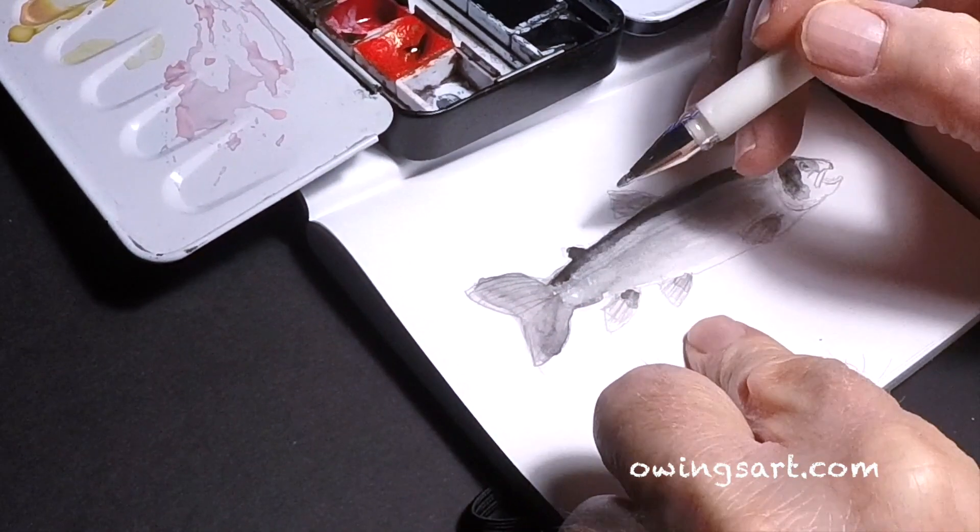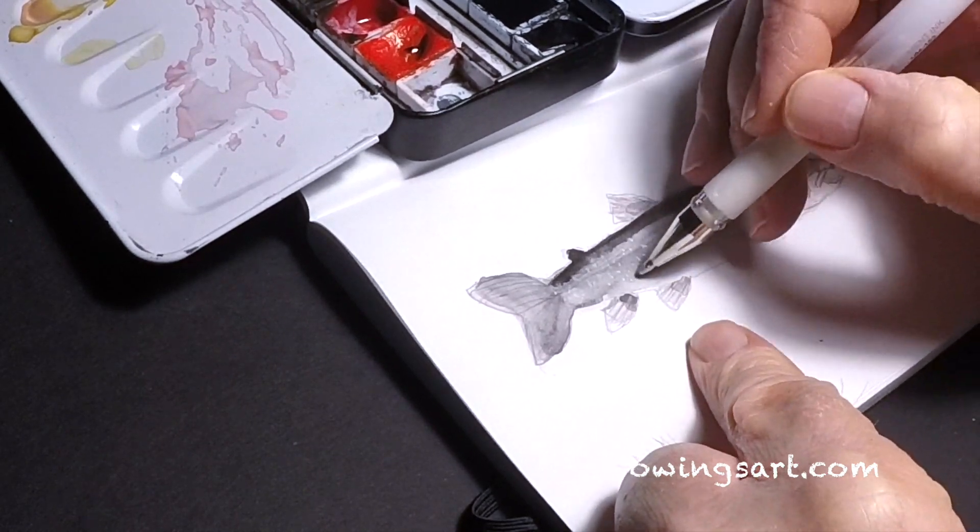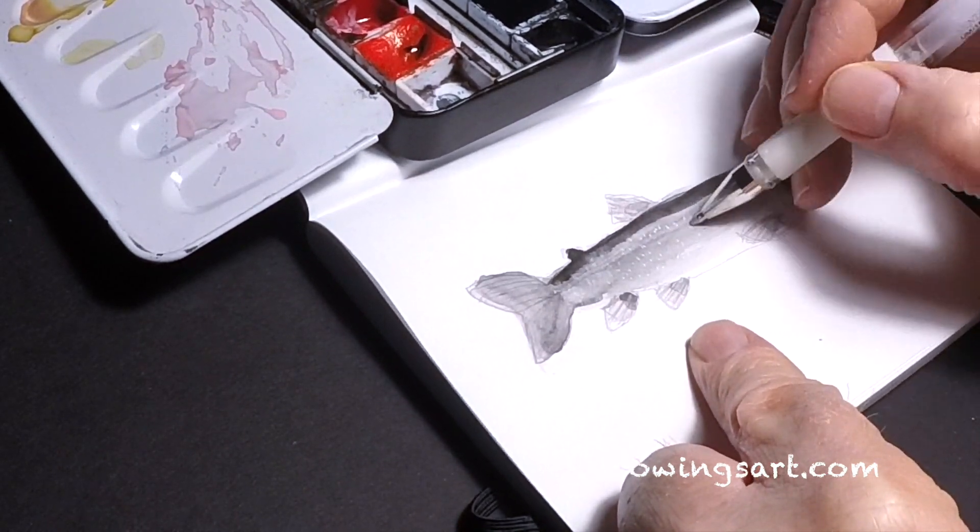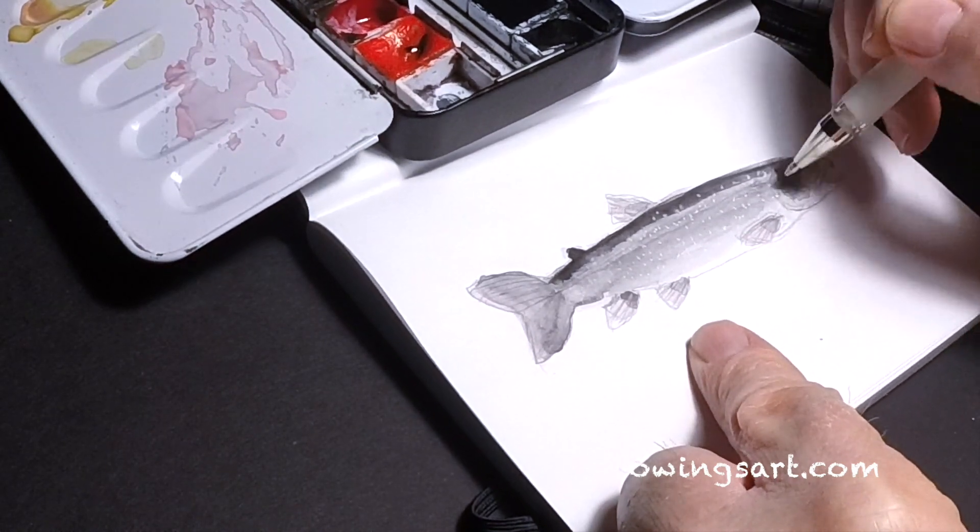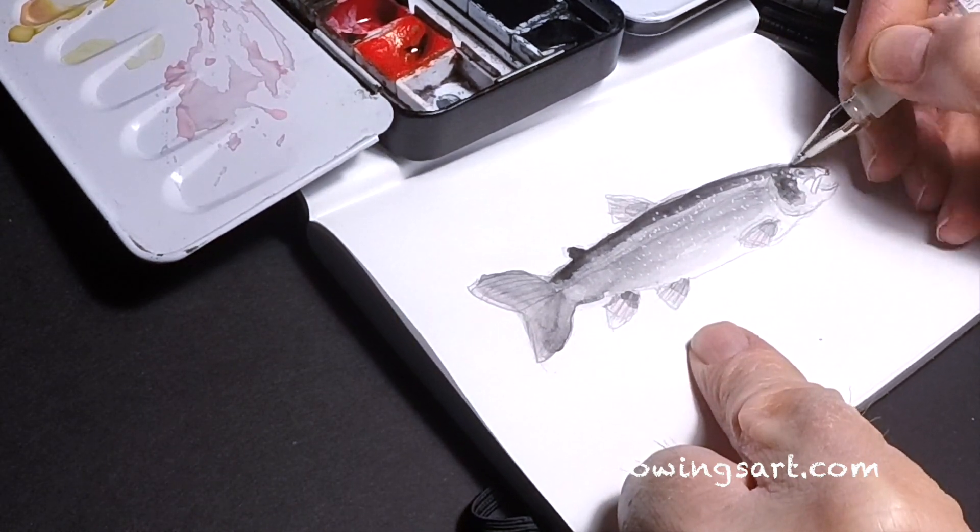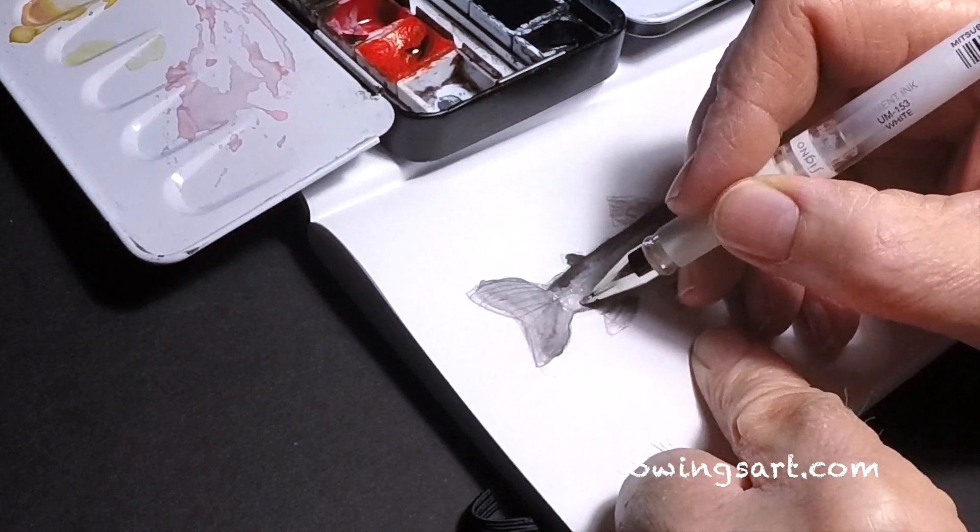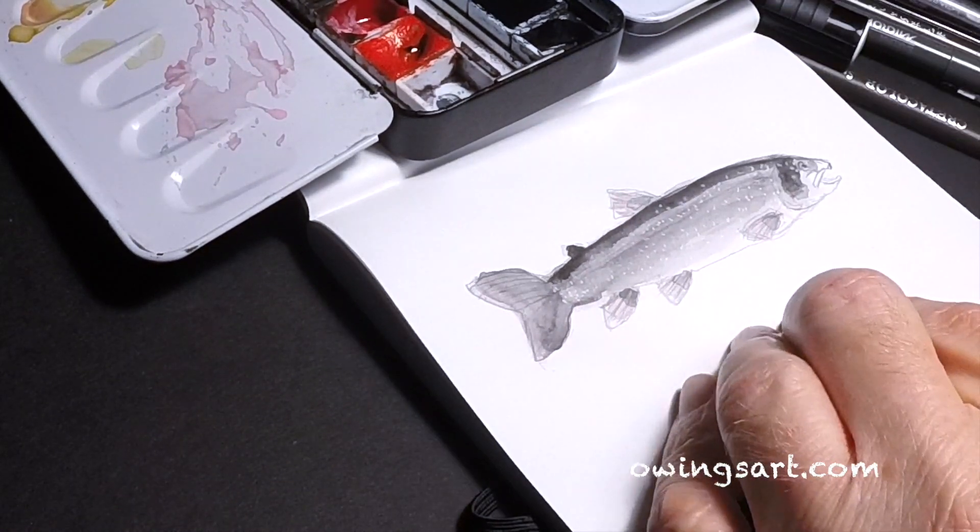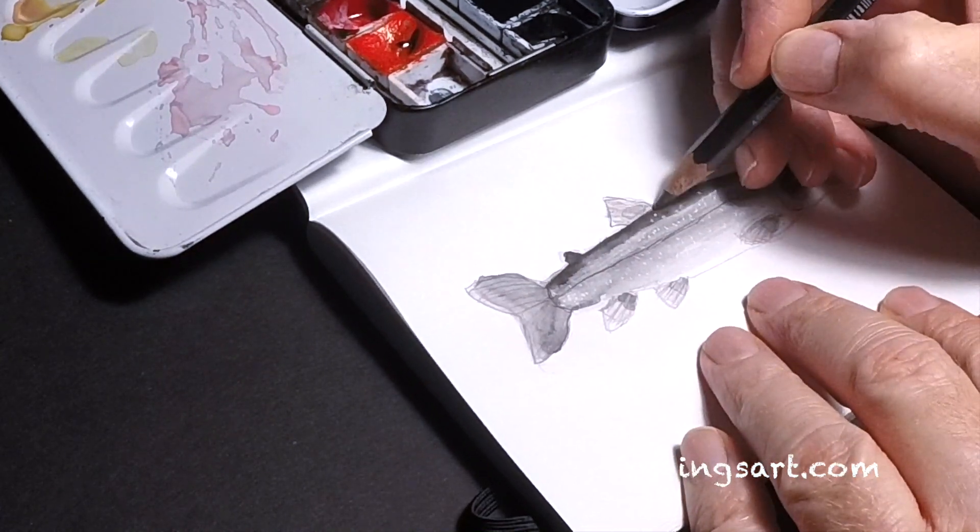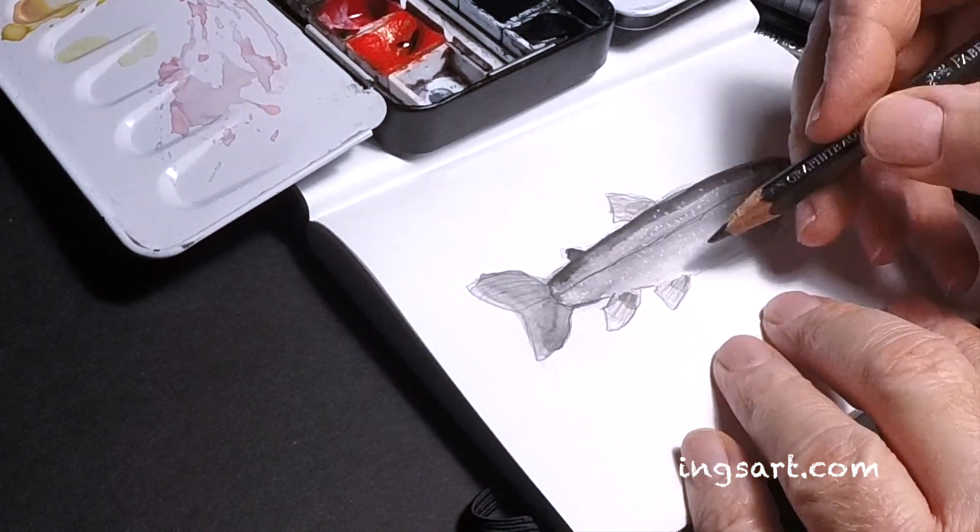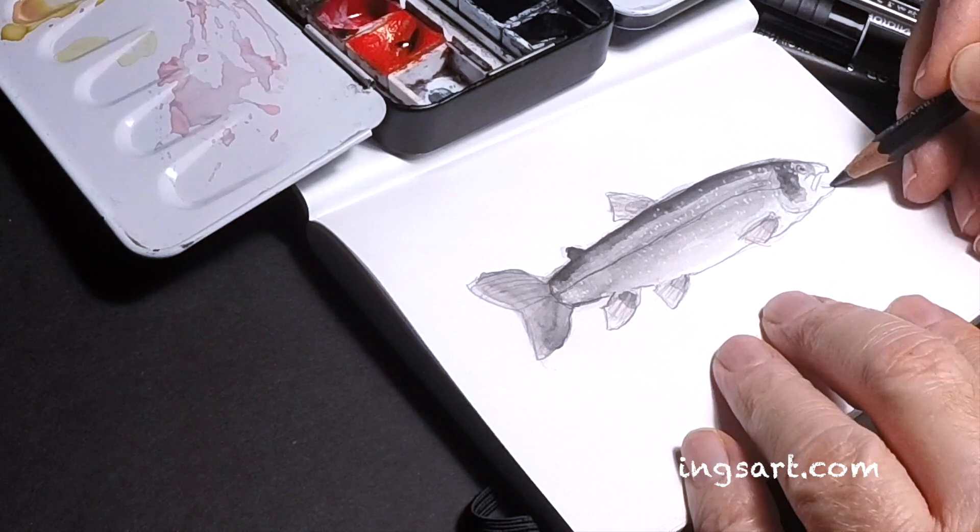Now here I'm going to use the very famous Uniball UM-153 white pen, just for the little spots on the lake trout. And yeah, that kind of leaves a cool effect on it. And just a little bit more graphite wash in here to add a little definition to the fins and some of the elements on this guy.